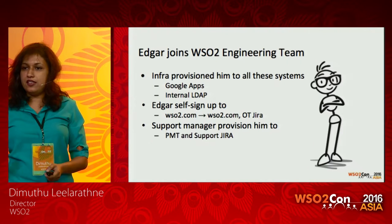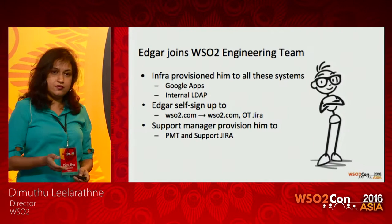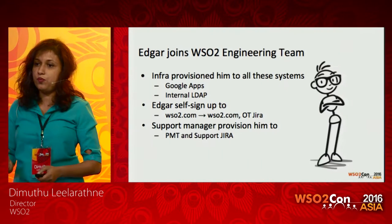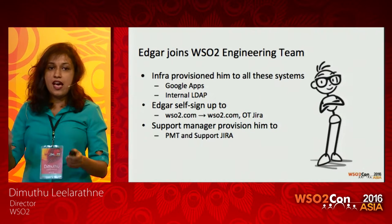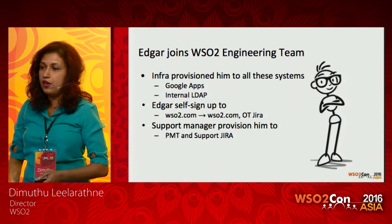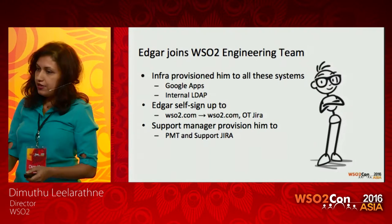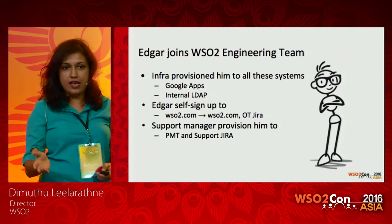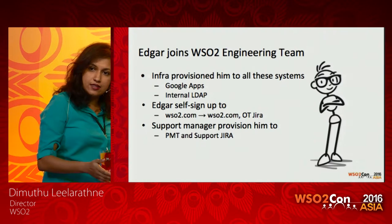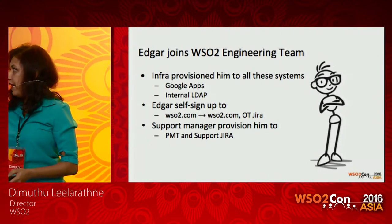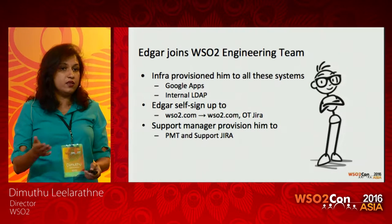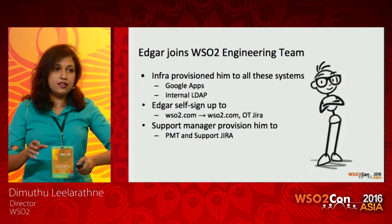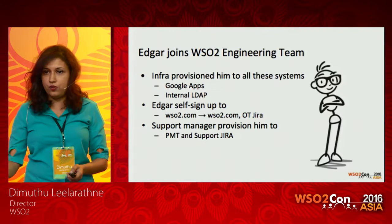I'll run through it using a user story. This is Edgar. He joins WSO2 as an engineering graduate, so we need to provision him into certain systems — different from a salesperson joining. When a person joins WSO2, the infra team provisions them to the internal LDAP and Google Apps. For other systems like PMT and Support Jira, they are provisioned as and when required by the support manager.